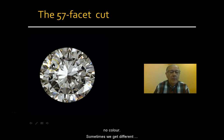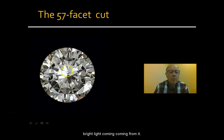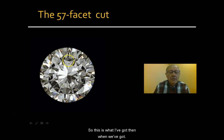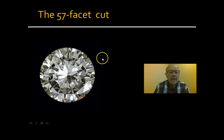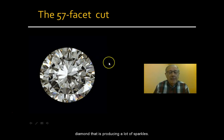Sometimes we get different colors, sometimes we get a bright white light coming from it. This is what we've got when we've got a diamond that is producing a lot of sparkle.